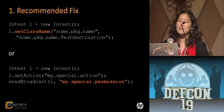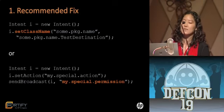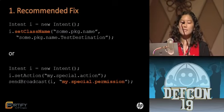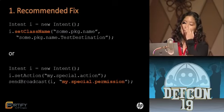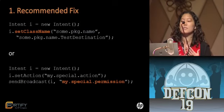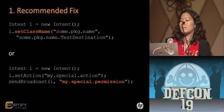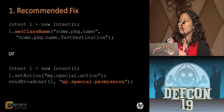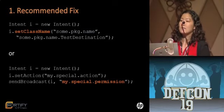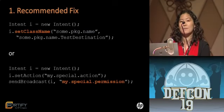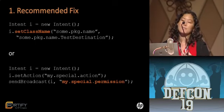Our recommended fix for this problem is to use explicit intents whenever possible — set the class name. If you're using a broadcast and want it to go to multiple recipients, consider adding permission requirements for recipients. Regardless of whether the intent holds sensitive data, don't unnecessarily expose that data. If you're only communicating within an application, use explicit intents — you already know the recipient component's names.